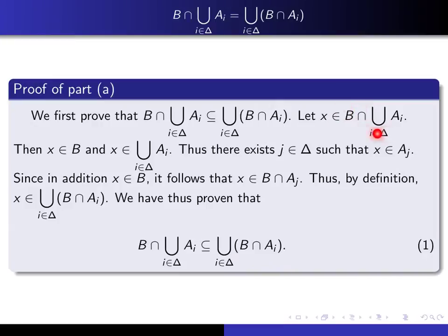Let x be an element of the intersection on the left-hand side. That means it's in b and it's in the union. I'll use a different letter j for the index to avoid confusion. Thus, there exists an index j such that x is in a sub j. Since in addition x is in b, it follows that x is in b intersected with a sub j. So I've shown there exists an index j such that x is in b intersected with a sub j, and by definition x must be in the union of all the b intersected with a sub i's as i varies over delta. This proves the first inclusion.